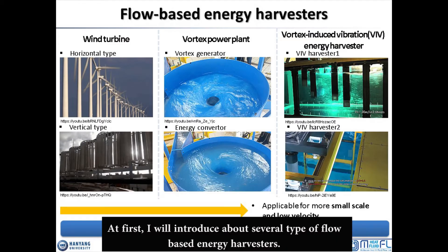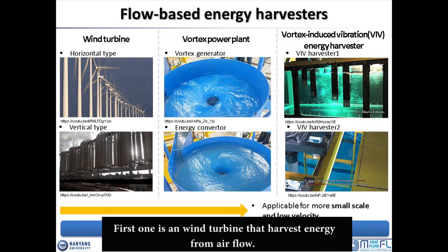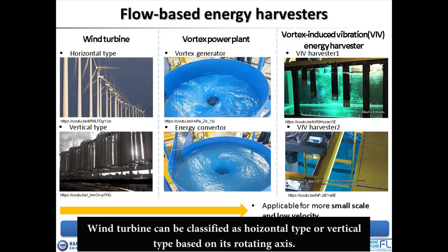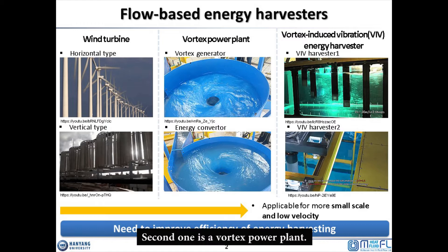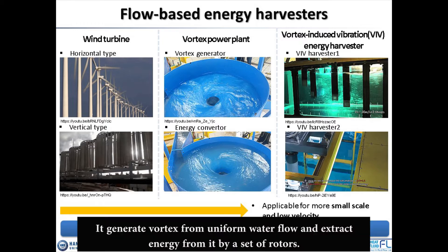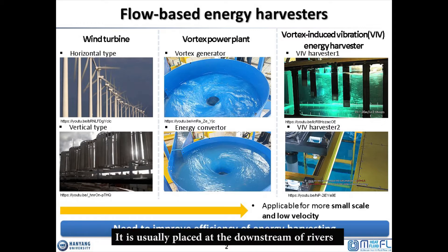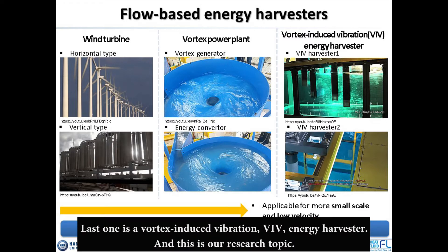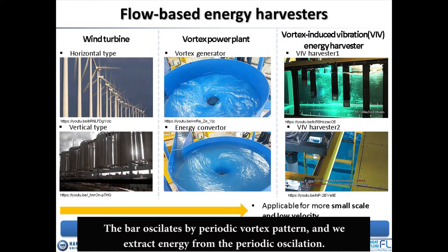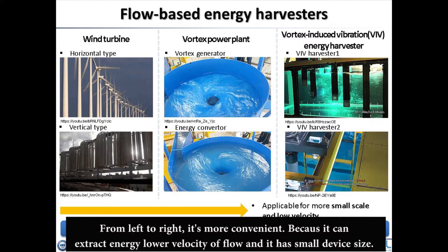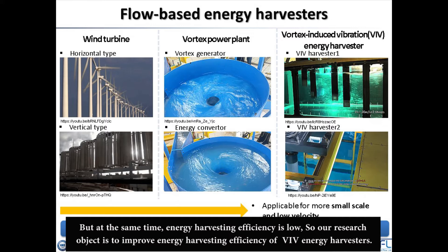First, I will introduce several types of flow-based energy harvesters. The first one is a wind turbine that harvests energy from airflow; it can be classified as horizontal or vertical type based on its rotating axis. The second one is a vortex power plant, which generates vortex from uniform water flow and extracts energy using a set of rotors, usually placed at the downstream of a weir. The last one is the vortex-induced vibration, or VIV, energy harvester — our research topic. The bar oscillates by a periodic vortex pattern and we extract energy from the periodic oscillation. It is more convenient because it can extract energy from lower velocity flows and has a small device size, but the energy harvesting efficiency is low.